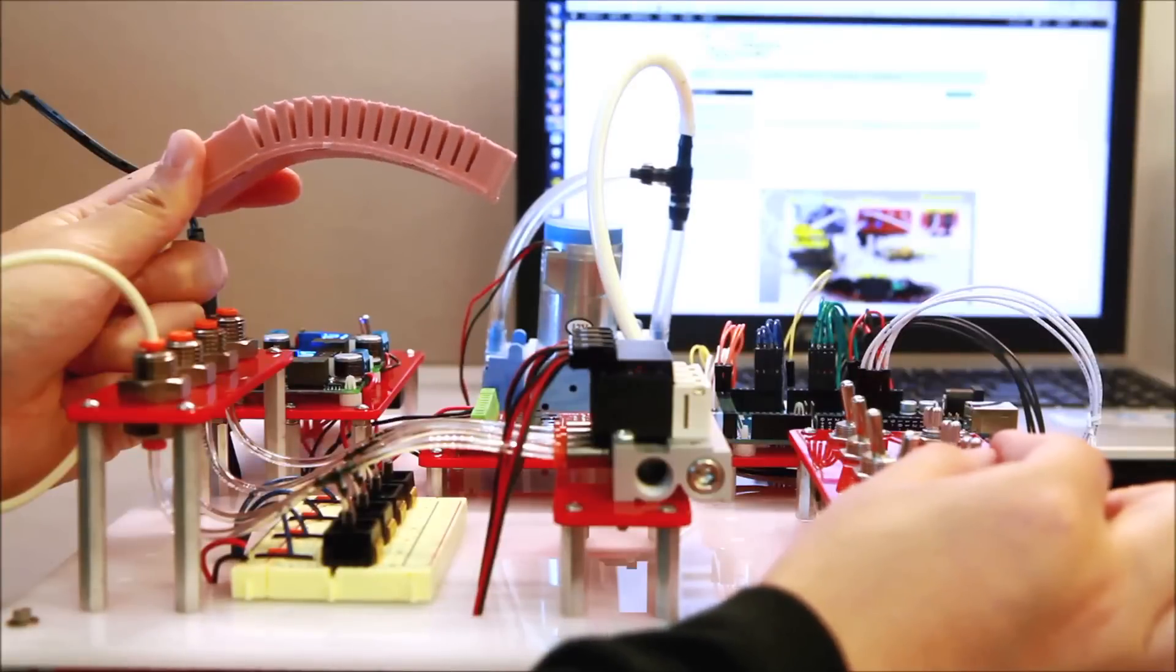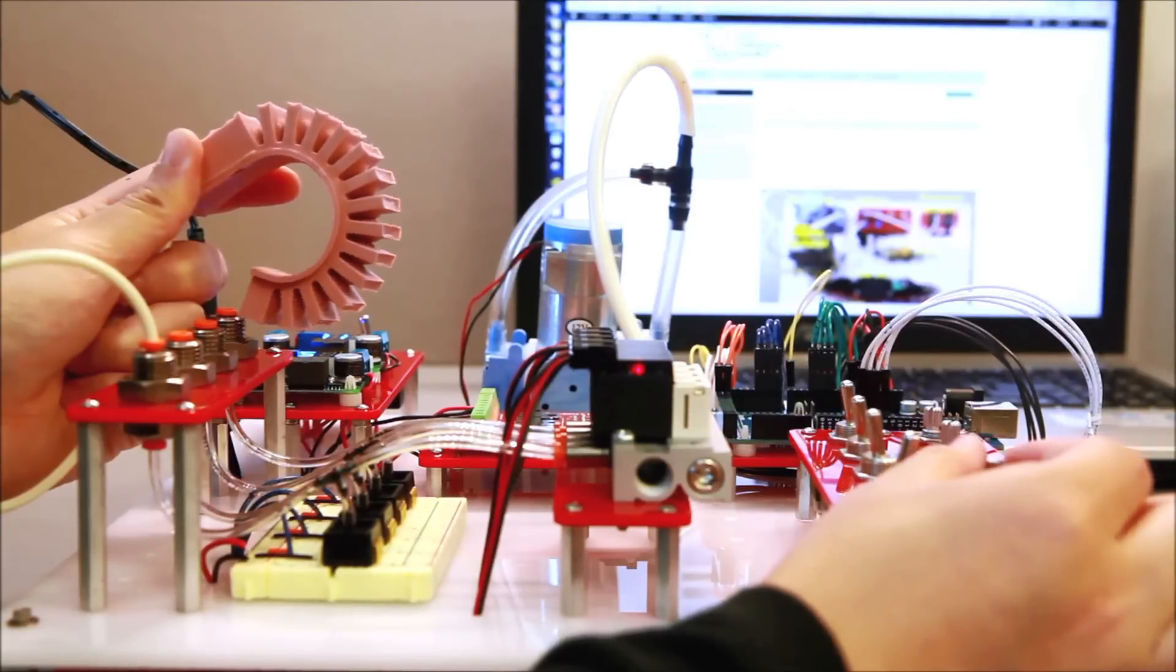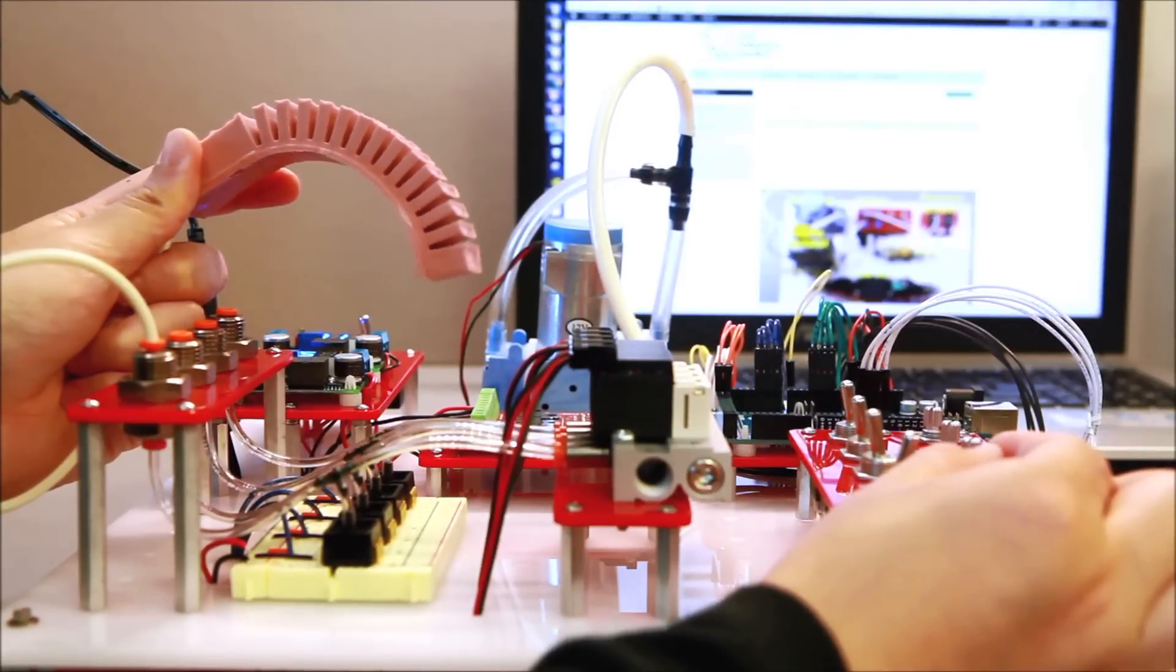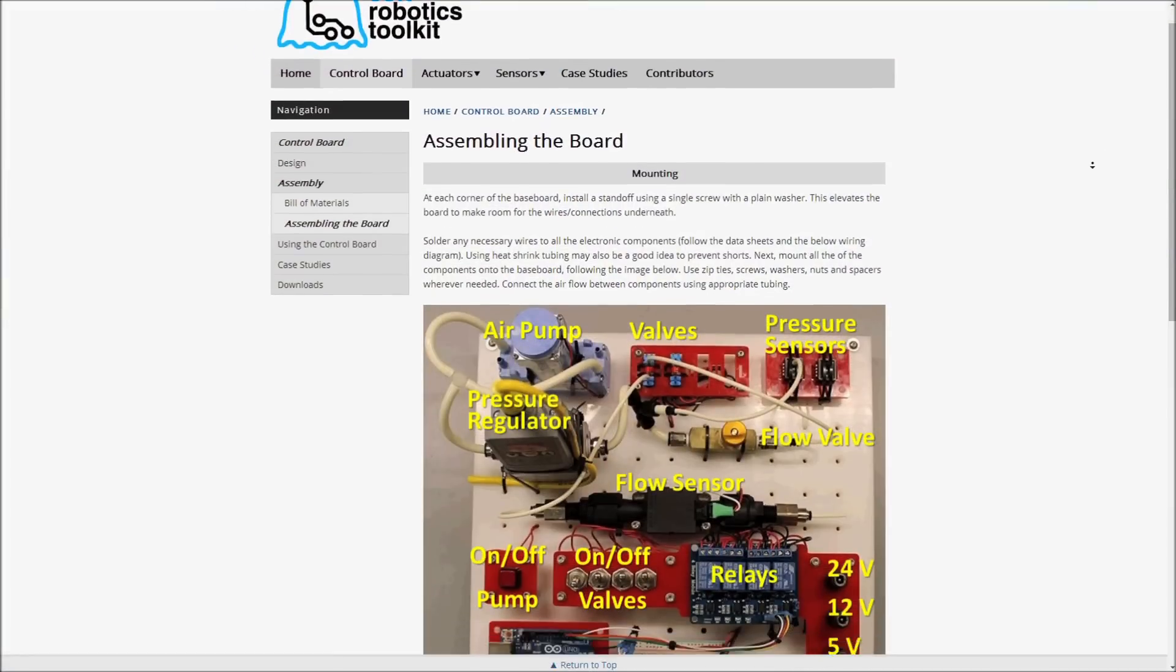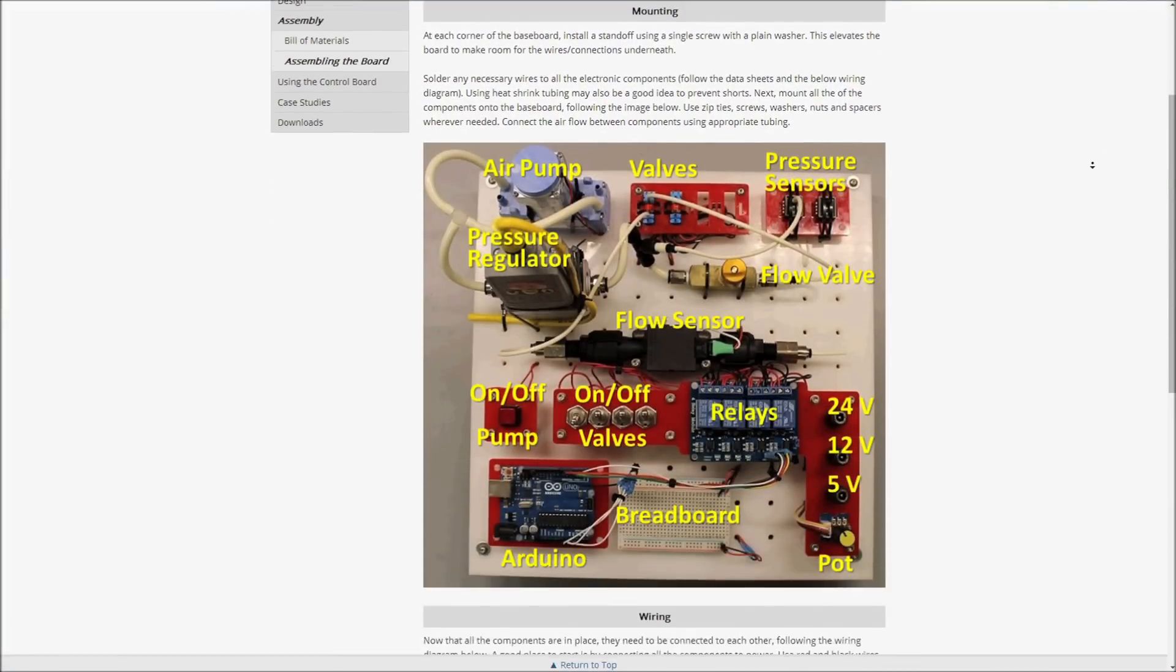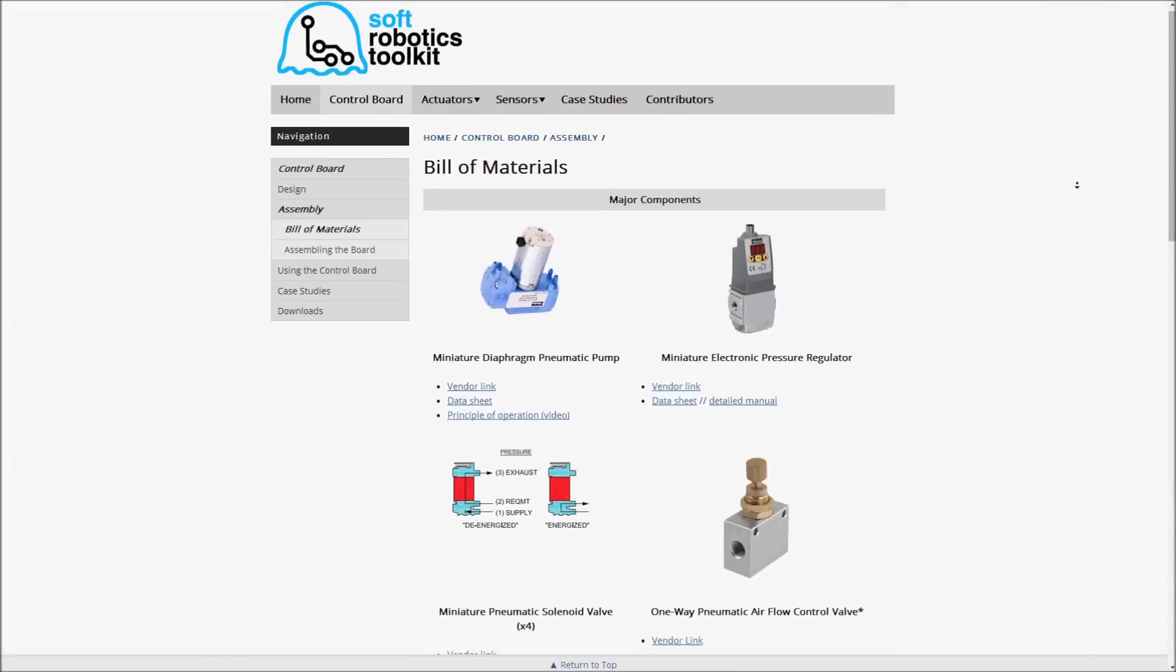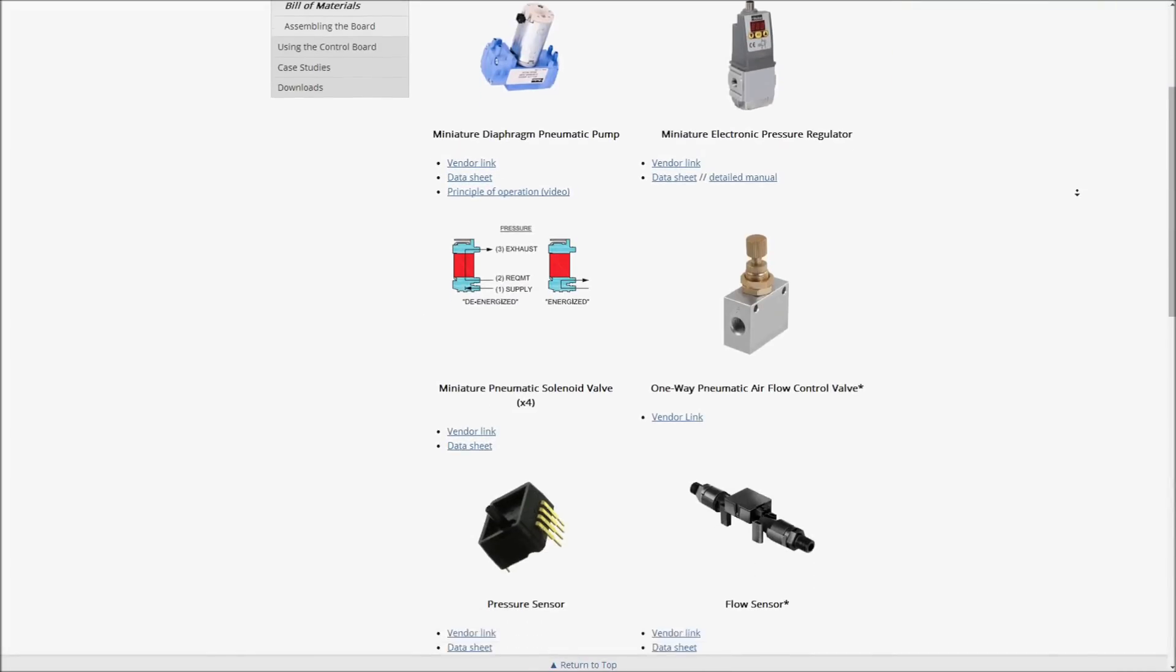Much of the hardware used to operate soft robots is transferable between one device and another. The toolkit includes details of an open-source control board based on readily available parts that can be used for a wide variety of applications.